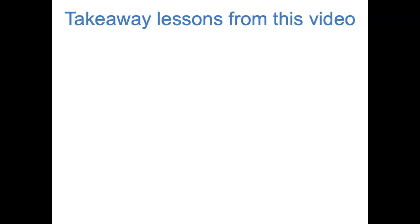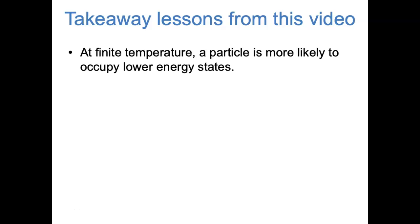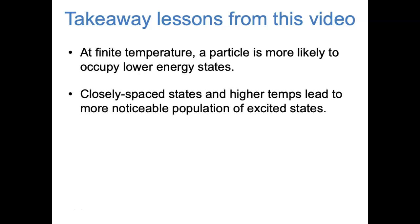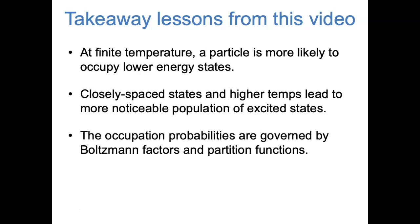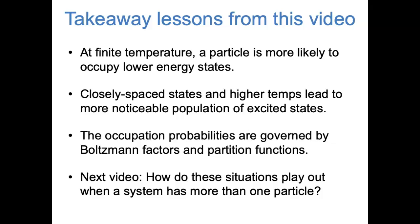Finally, a few takeaway lessons from this video. At finite temperature, a particle is more likely to occupy lower energy states than higher energy states. More closely spaced energy states and higher temperatures tend to lead to more noticeable population of excited states, whereas energy states that are far apart or at low temperatures lead to almost complete occupation of the ground state. Mathematically, the probabilities that given states are occupied are governed by Boltzmann factors and partition functions. While this video focused on one particle in a given set of energy levels, in the next video we'll see how things play out when there's more than one particle.